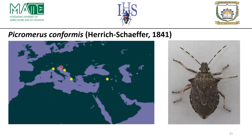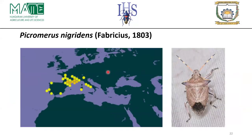Picromerus conformis has a very scattered distribution with low recorded data, but is mainly found in the Mediterranean region, southern Europe, and the west Caspian countries. Picromerus nigridans is known in the Arabian Peninsula and the southern part of Russia in the Mediterranean regions.